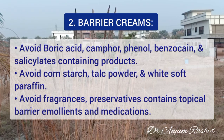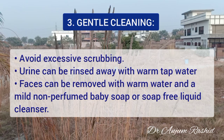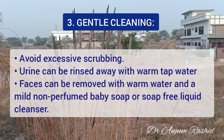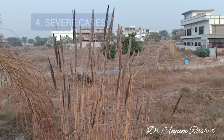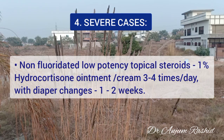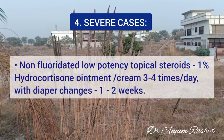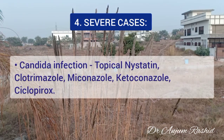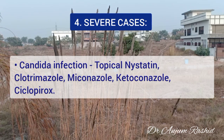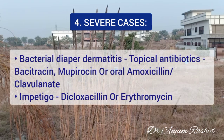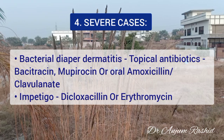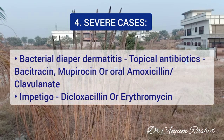The third important measure is gentle cleaning of the diaper area; excessive scrubbing should be avoided. Urine can be rinsed away with warm damp water and feces can be removed with warm water and mild non-perfumed soap. In severe cases of diaper dermatitis, a non-fluorinated low-potency corticosteroid such as 1% hydrocortisone cream or ointment can be used, applied 3–4 times daily with each diaper change for 1–2 weeks. High-potency corticosteroids should be avoided in children. For candida infection, topical nystatin, clotrimazole, miconazole, ketoconazole, or ciclopirox are helpful. For bacterial infection, topical antibiotics such as bacitracin or mupirocin can be used; in severe cases, oral amoxicillin-clavulanate may be given. Impetigo responds to dicloxacillin or erythromycin.